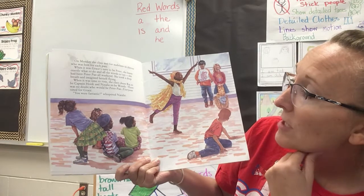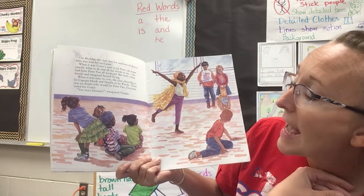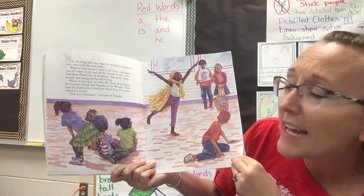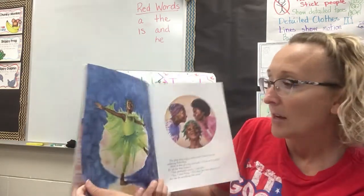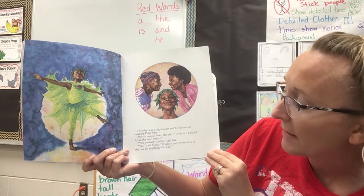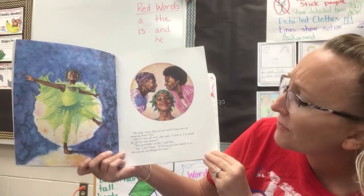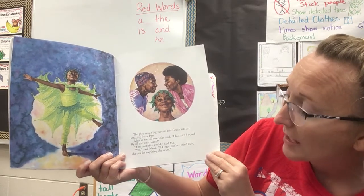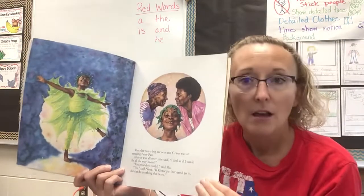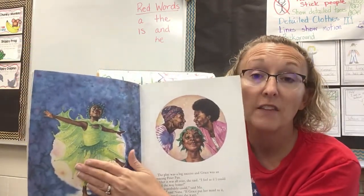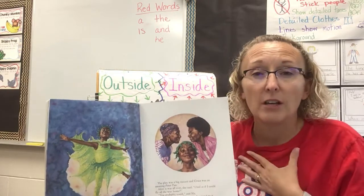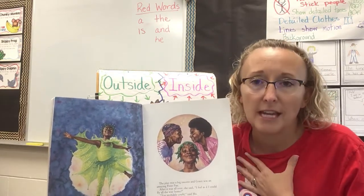When it was time to vote, the class chose Raj to be Captain Hook and Natalie to be Wendy. And there was no doubt who would be Peter Pan — everyone voted for Grace. 'You were fantastic,' whispered Natalie. The play was a big success and Grace was an amazing Peter Pan. After it was all over, she said, 'I feel as if I could fly all the way home.' Nana said, 'If Grace put her mind to it, she can do anything she wants.' We could describe her right here as feeling proud.